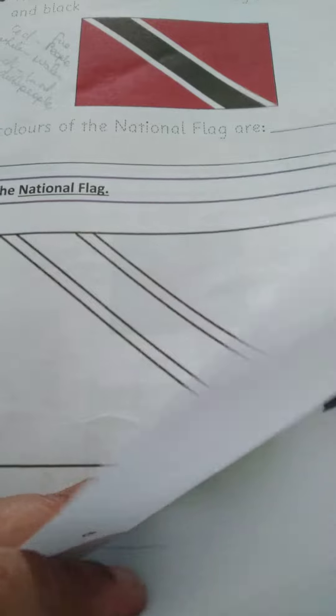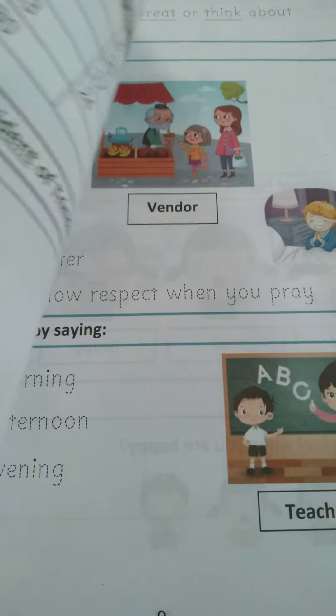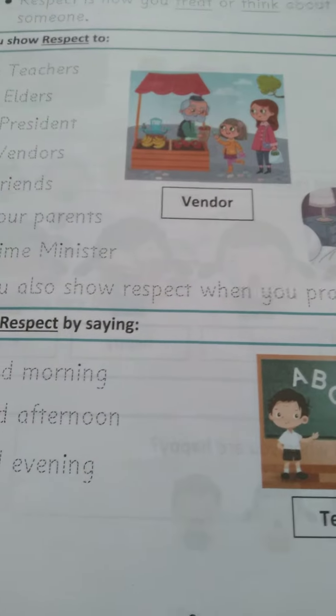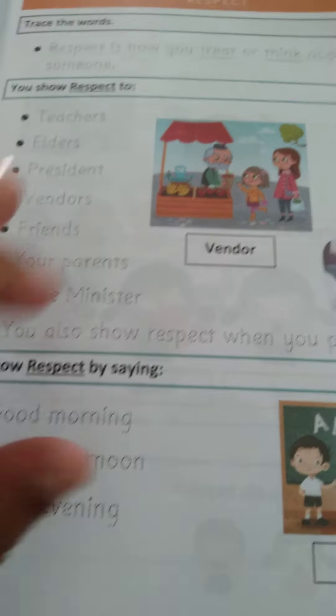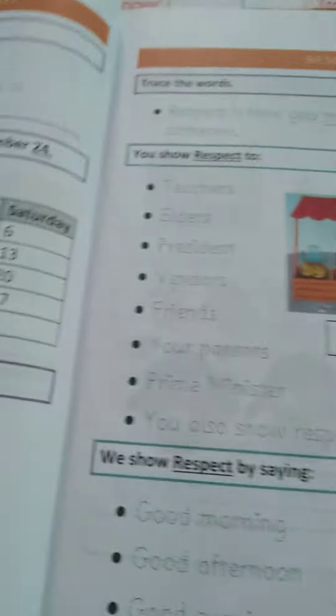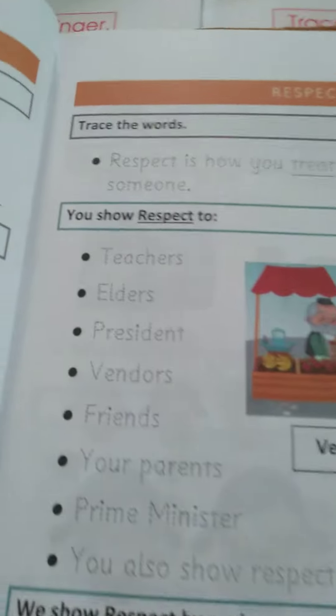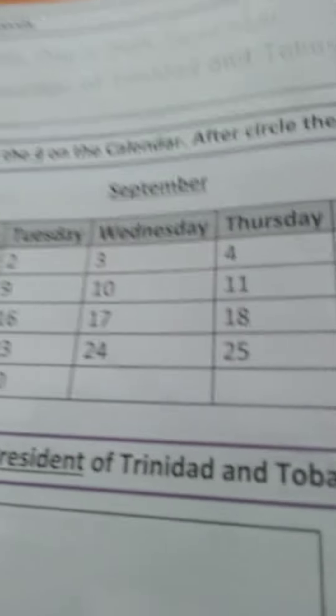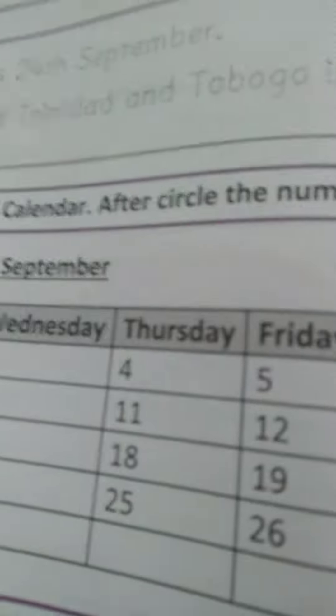Now we will talk about more of the emblems, but I want to tell you that on the 24th of September, Trinidad and Tobago will be celebrating Republic Day — the 24th of September.